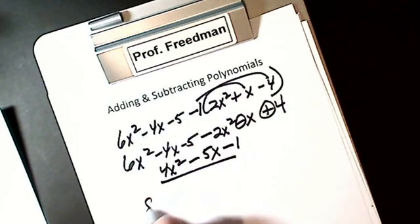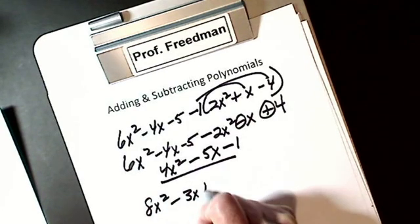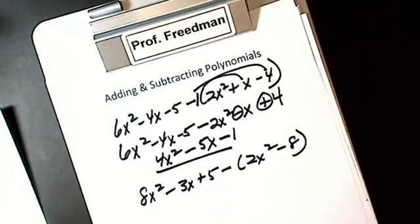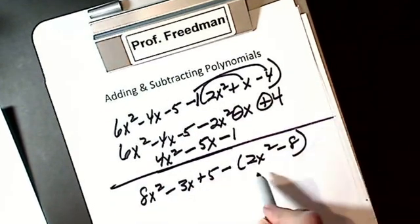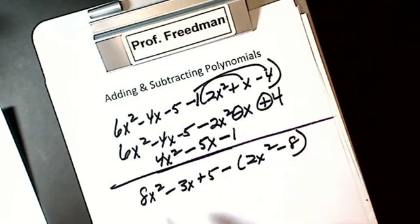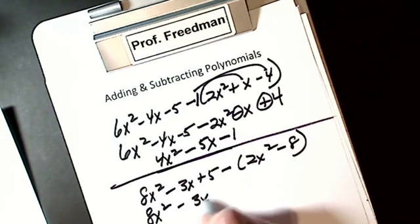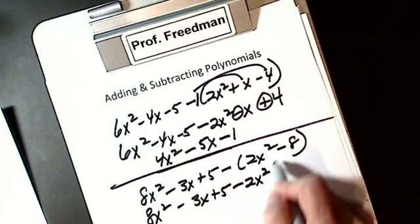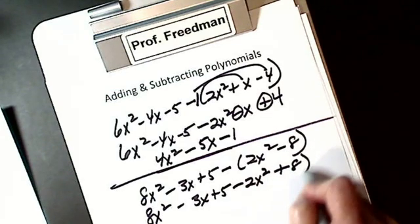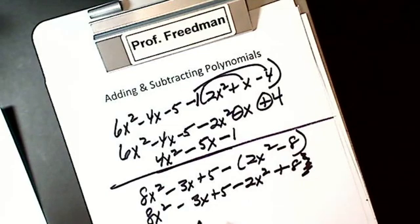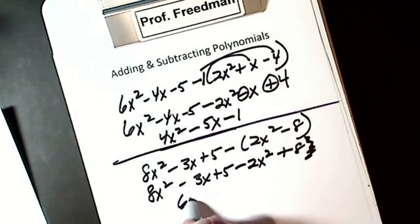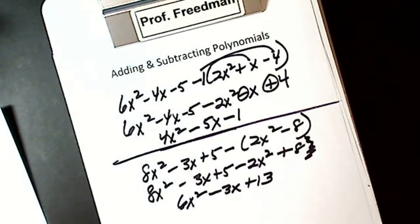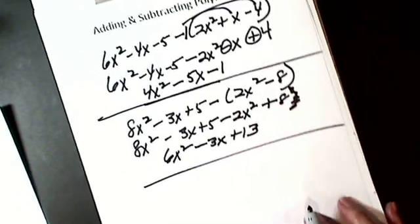All right, let's do another one. 8x squared minus 3x plus 5 minus 2x squared minus 8. A minus changes the sign of everything inside. So my 8x squared minus 3x plus 5 stays. Inside is a plus. I get minus 2x squared. Inside is a minus. I get a plus 8. Now I combine like terms. So I'm going to get 6x squared. There's no other x's. And I get plus 13.